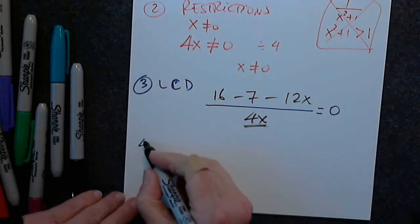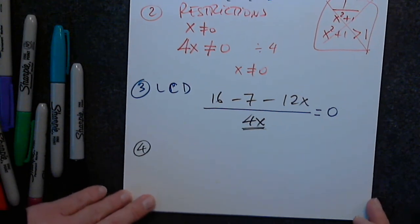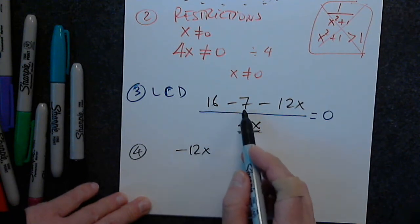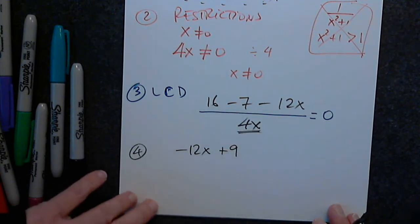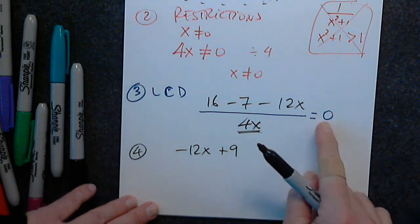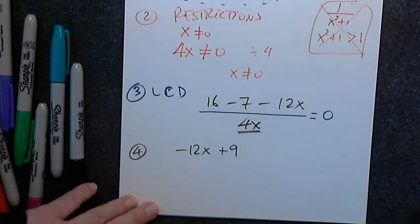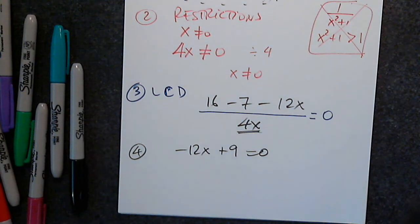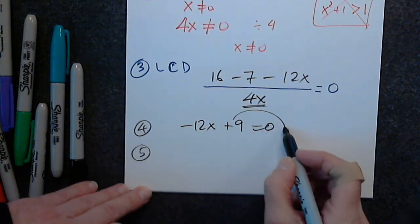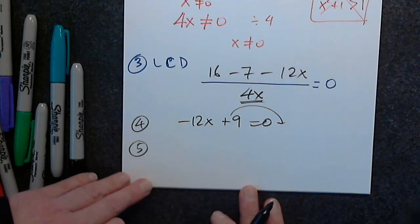Now the next step, number 4: put everything in descending order. Negative 12x, and 16 minus 7 is positive 9. A fraction equals 0 — when does that happen? When the numerator is 0. So I just wrote the numerator equals 0. This is now a linear equation. For linear equations, we separate the terms with x from terms without x.